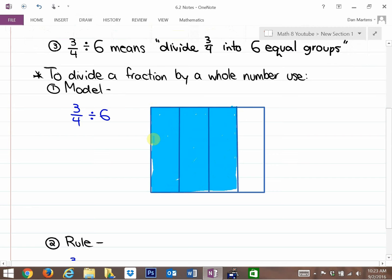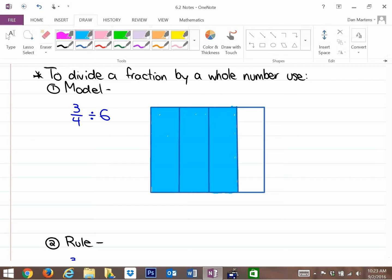One way to picture this is to imagine this 3/4 as some cake. I've got 3/4 of a cake and I need to divide that cake between six people equally. Picture you and five of your best friends needing to share this 3/4 of a cake.